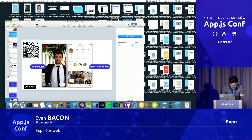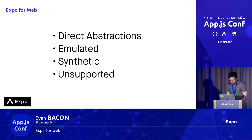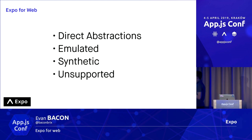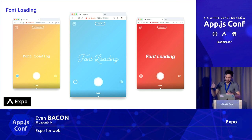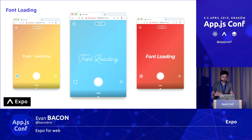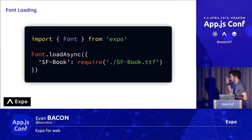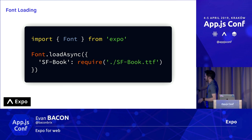I divided the API into four categories. The first one is font loading — these are the direct abstraction APIs. As we were talking about earlier, it's kind of inconvenient that you might have to load fonts one way on native and a totally different way on web. With Expo, you can now just load them the exact same way everywhere using a JS library. There's no CSS required, and all the assets are handled ubiquitously across all platforms.